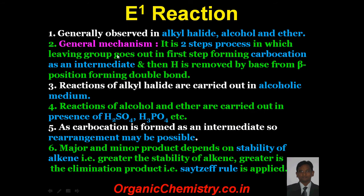Beta elimination is of three types: E1, E2, or E1CB. For E1 reaction, it is generally observed in alkyl halides, alcohols, and ethers. The general reaction mechanism is a two-step process in which the leaving group departs in the first step, forming a carbocation intermediate, and then hydrogen is removed by a base from the beta position, forming a double bond.